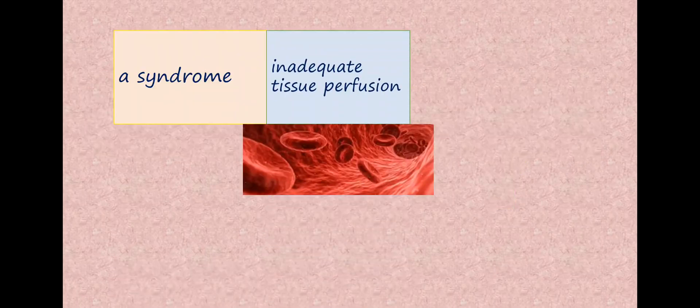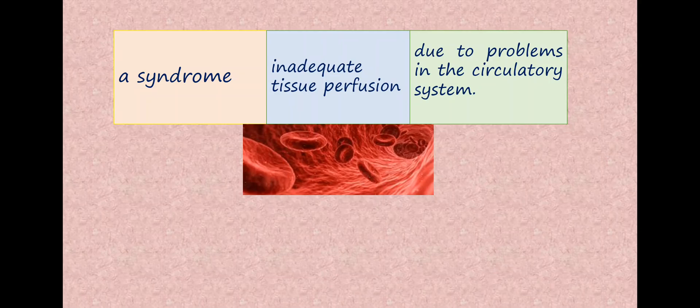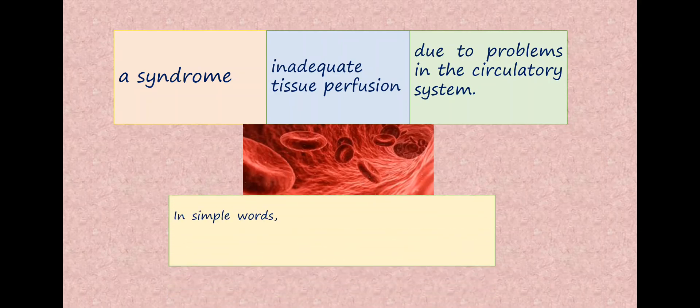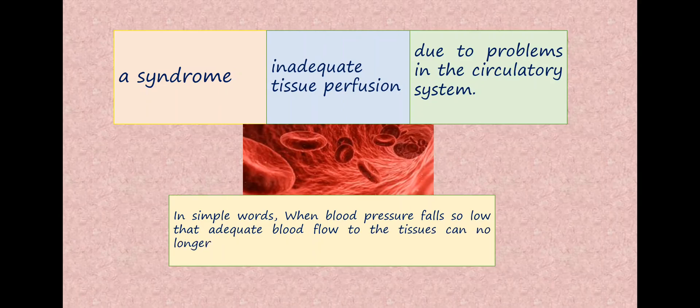So what is circulatory shock? Circulatory shock is defined as a syndrome of inadequate tissue perfusion due to problems in the circulatory system. A syndrome means it is a collection of various signs and symptoms. So the tissue perfusion is not adequate. In simple words, we can say that blood pressure falls so low that adequate blood flow to the tissues can no longer be maintained.